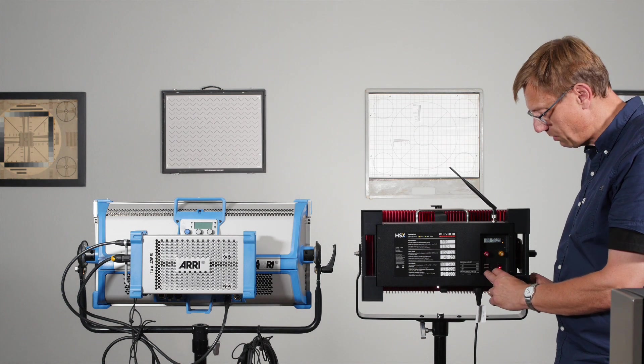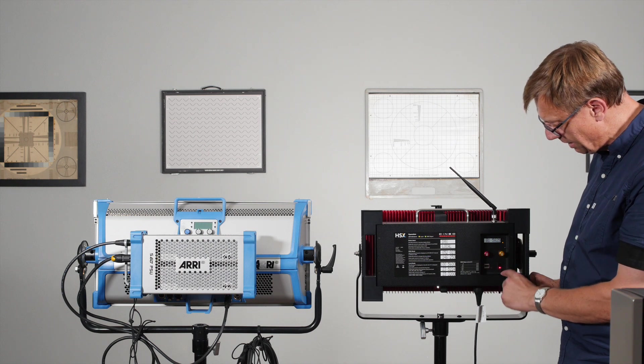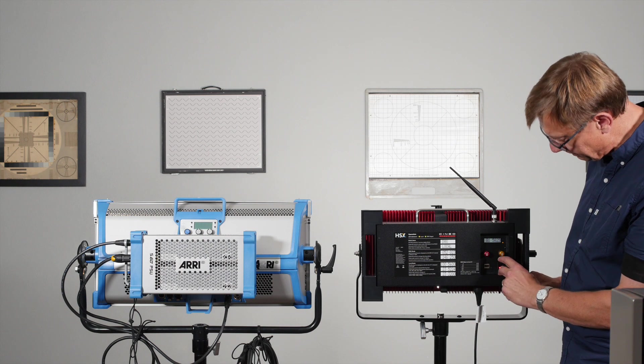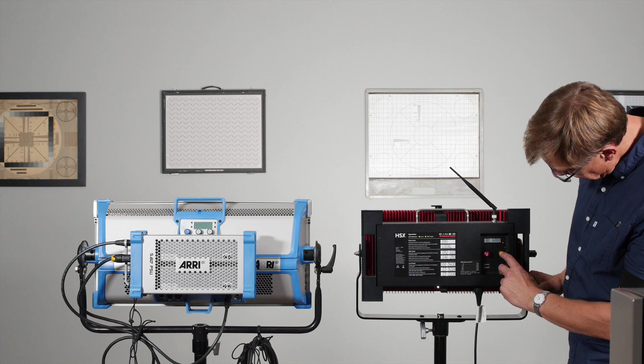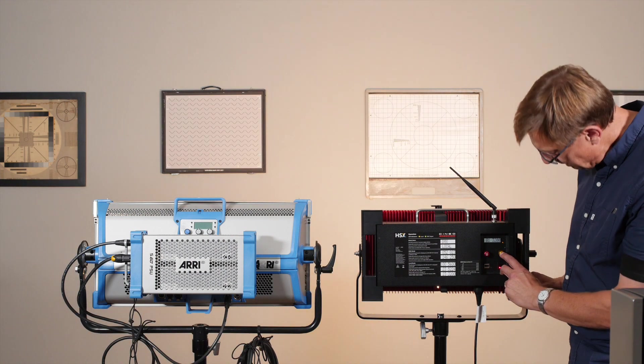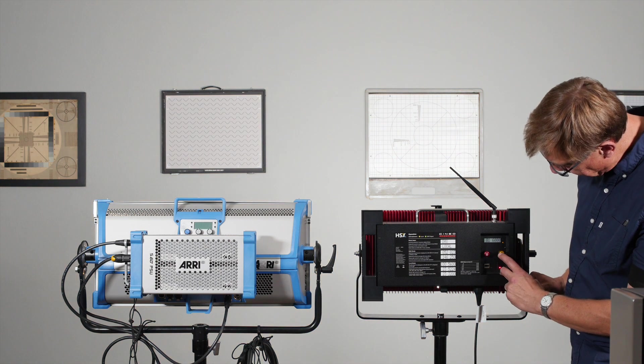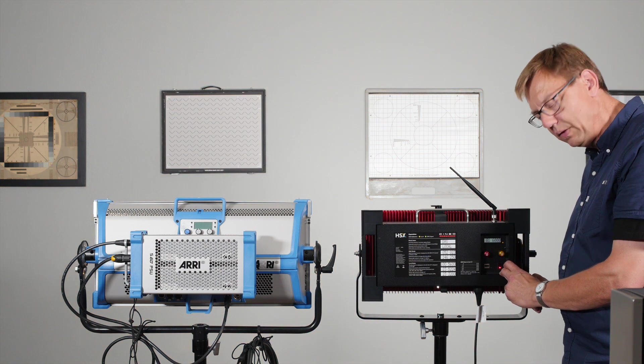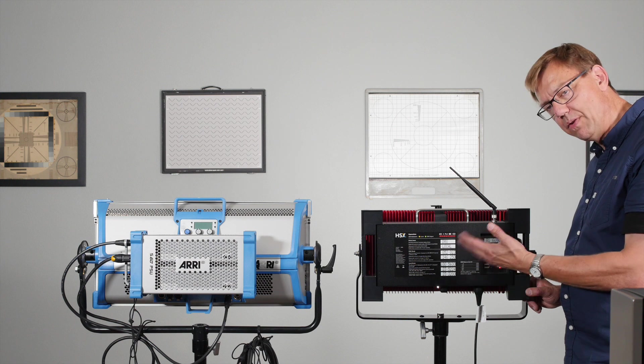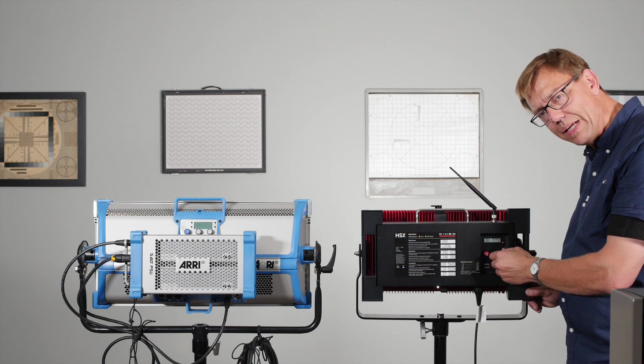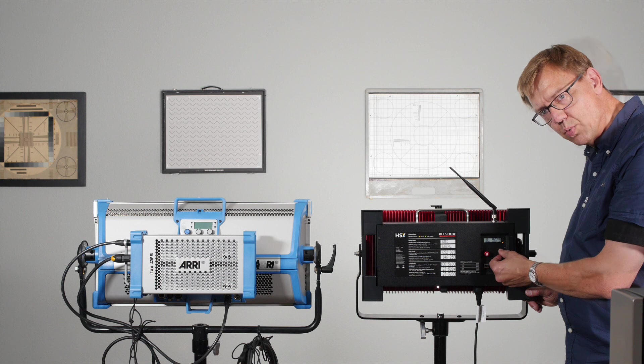That's a pretty clever way of setting that up. With the button on the right, the gold button, you start with 2,700, then you've got 3,200, 4,300, 5,600, and 6,000 Kelvin. So that's if you just want to bump through quickly, or you can dial it in as you wish as well.